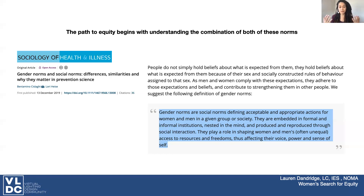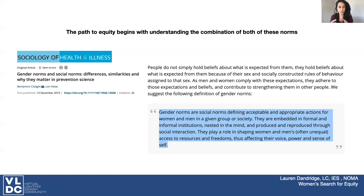They are embedded in formal institutions, informal institutions, nested not just in the mind, and are produced and reproduced through social interactions. So maybe it is not the rules of your actual workplace, but maybe it is the community and the social construct of the community of your workplace. So these norms play a role in how women and men's often unequal access to resources and freedoms are affecting voices, power structures, and a sense of self.